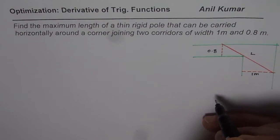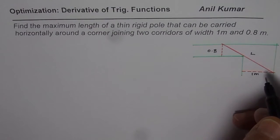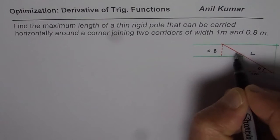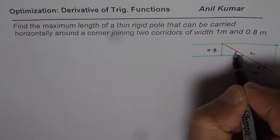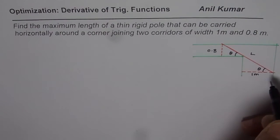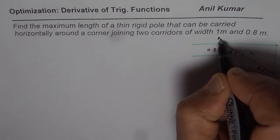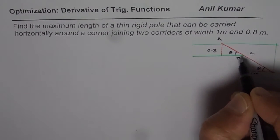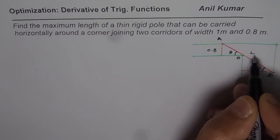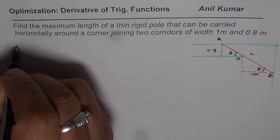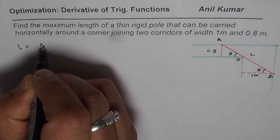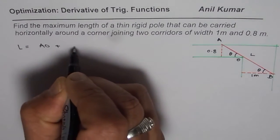Let the angle be theta — we consider this angle to be theta. Let us name these points as A, O, and B. In that case, the length L can be written as AO plus OB.